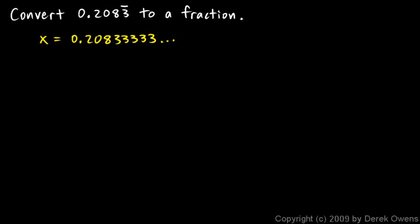And since there's one digit that repeats, just the three, what I do is multiply both sides of this equation by ten. If there were two digits that repeated, I would multiply both sides by a hundred. If three digits repeated, I would multiply both sides by a thousand. But there's a single digit that repeats, so I multiply both sides of this equation by ten.